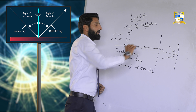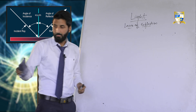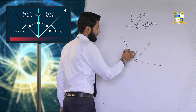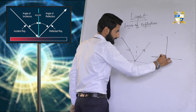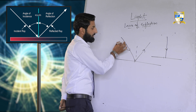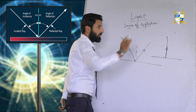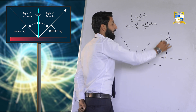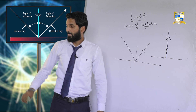We can draw the same diagram: this is a mirror, this is the normal. In the normal diagram, the incident ray strikes at some angle and we have a reflected ray. In the special case, the incident ray strikes the mirror at 90 degrees — it coincides with the normal — and the reflected ray also goes back through the same path, making an angle of zero degrees with the normal. This is the special case of the law of reflection.